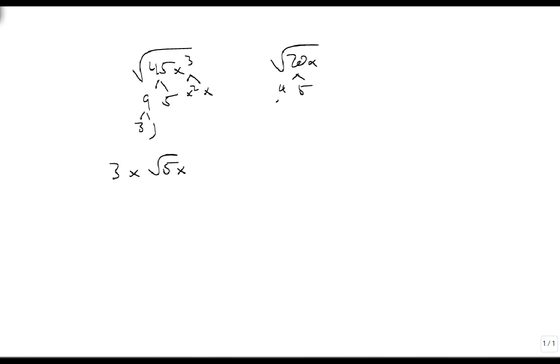Here, 20 is 4 and 5, which is 2 and 2. So a 2 comes out. And the inside is 5x. So the radicals are the same, or the indexes are the same, and the radicands are the same. They're both 5x.